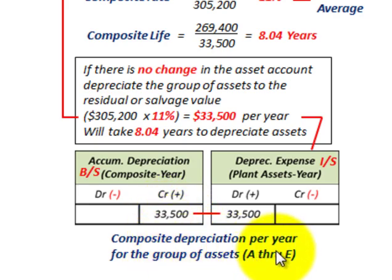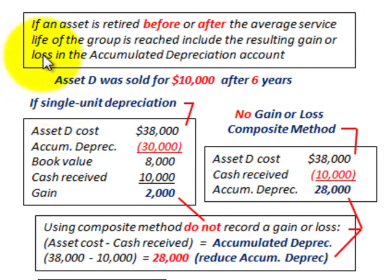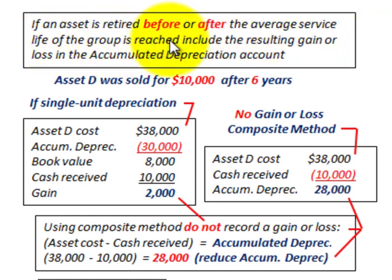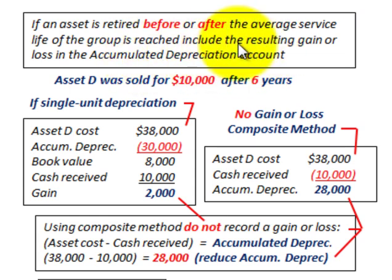Now let's look at the case where an asset is retired before or after the average service life of the group — that 8.04 years — is reached. In that situation, you have to include any resulting gain or loss in accumulated depreciation. We handle this gain or loss in a different fashion with the composite method.